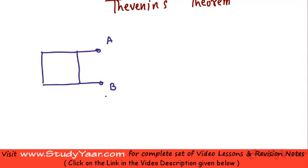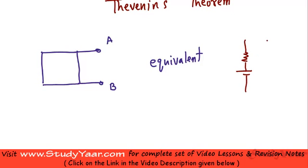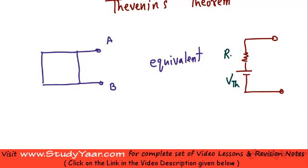This arbitrary network can be transformed into an equivalent network which has a voltage source and a resistance in series. These two are equivalent, and this voltage source is represented as Vth, and this resistance is represented as Rth.